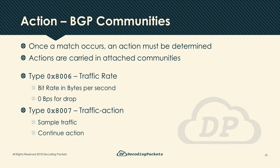Type 0x8007 has very sparse support and can carry two actions. First, it allows the client to sample the matching traffic — essentially a form of flow accounting; look for the 'sample' command in the Junos command reference. Second, a 'continue' action allows matched traffic to be further processed by remaining flow spec policies — useful if you want to sample traffic but then keep passing it through the rest of the policy for rate-limiting or remarking.